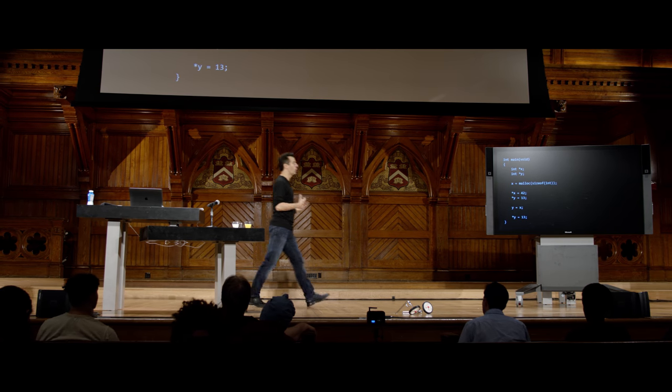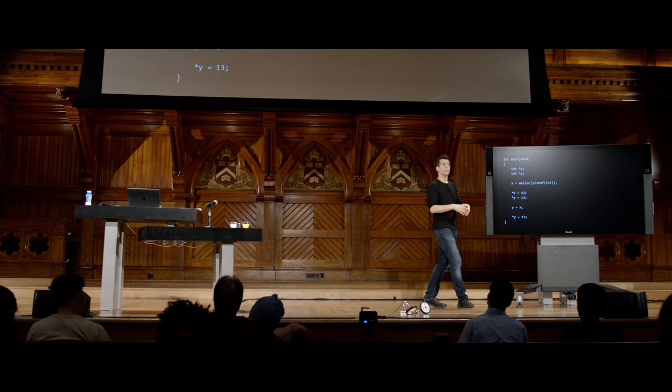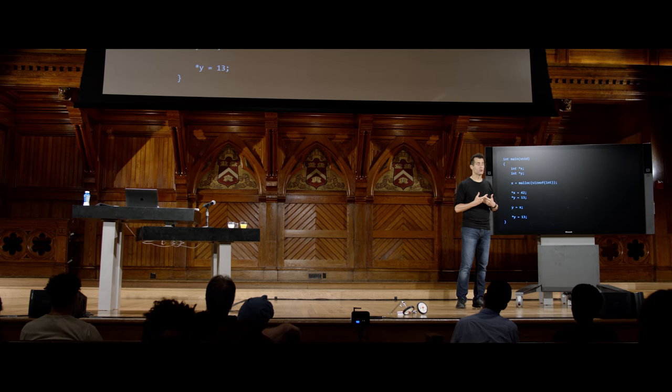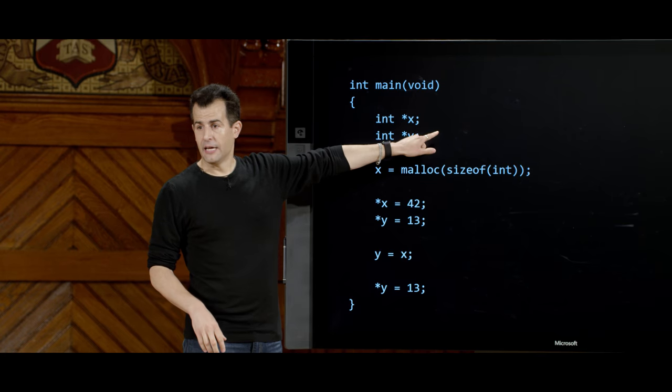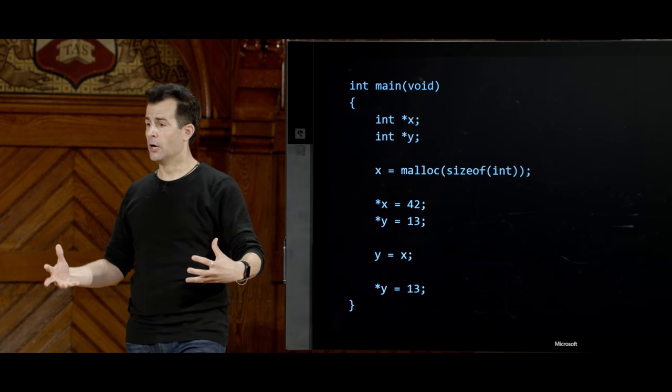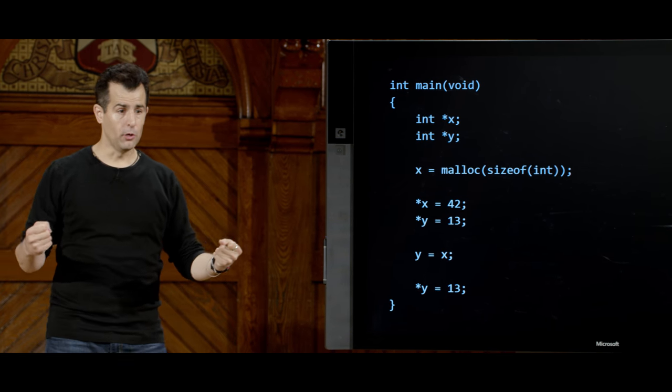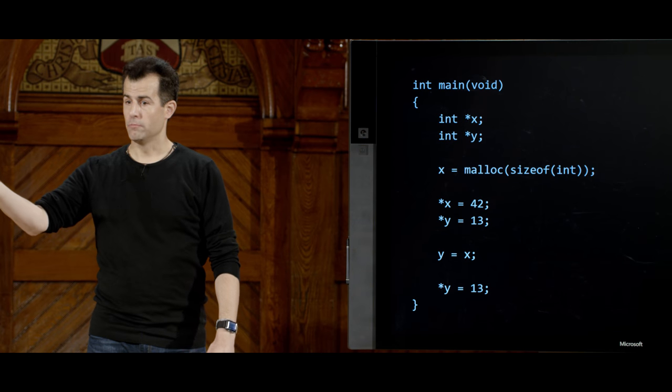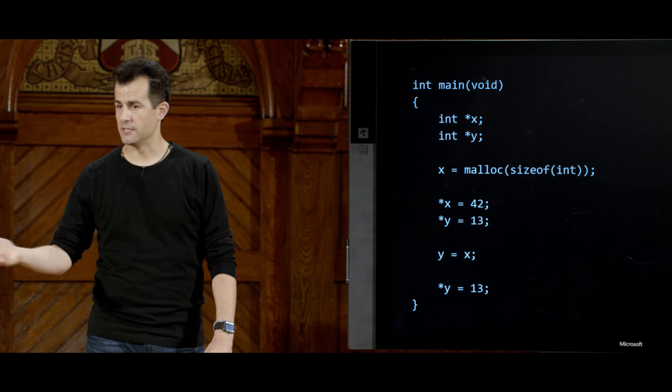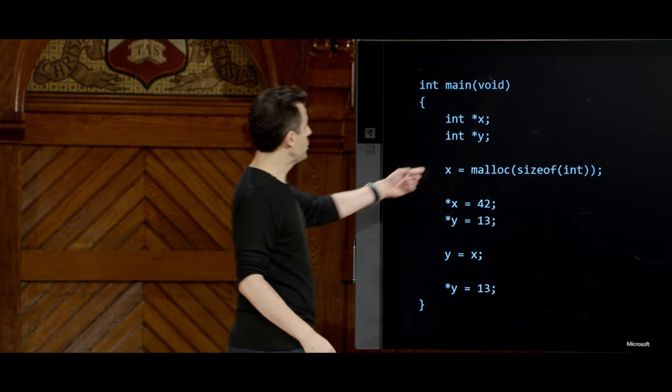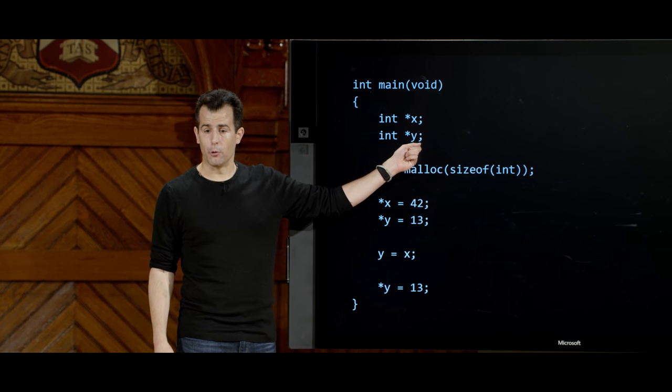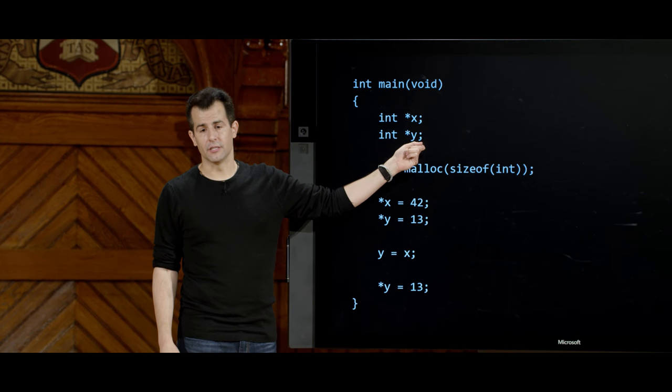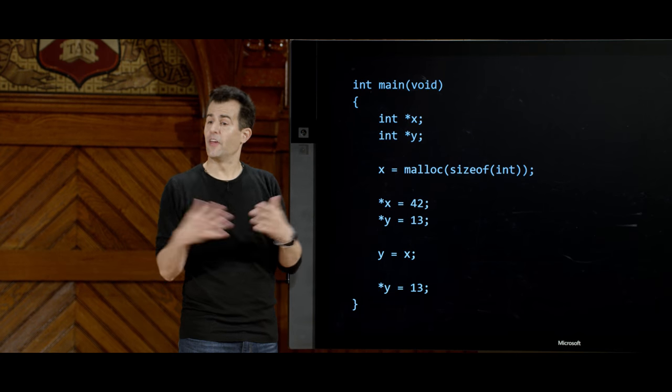So here is a contrived example of code that is by design buggy. But let's just talk it through in English what these lines are doing. This line here, int star x, is saying, hey computer, give me a variable that will store the address of an integer. So give me a pointer to an int is the more casual way of saying it. Hey computer, give me another variable that's going to store the address of an int and call it y. So x and y, that's it.